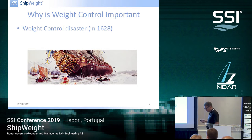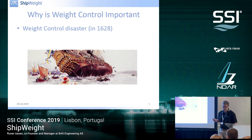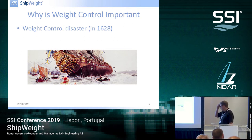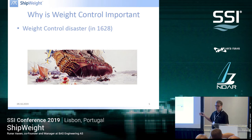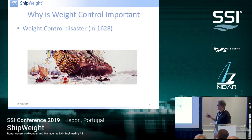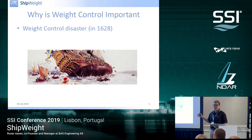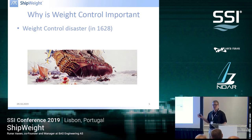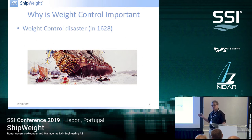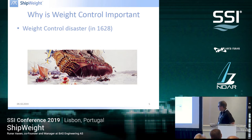Weight control is important to avoid weight disasters. You probably know the Vasa ship very well — a well-documented weight control disaster that happened in 1628 — but this is not something of the past. I could bring up very fresh examples. In the last decades, there have been naval projects which have cost billions of euros because they missed the weight and CG. So this is very much alive.